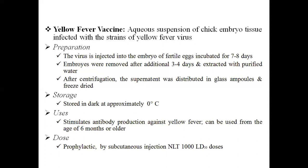If stored at high temperature, the vaccine may lose its potency. It stimulates antibody production against yellow fever and can be used from the age of six months and older. The dose is prophylactic and should be given by subcutaneous injection.